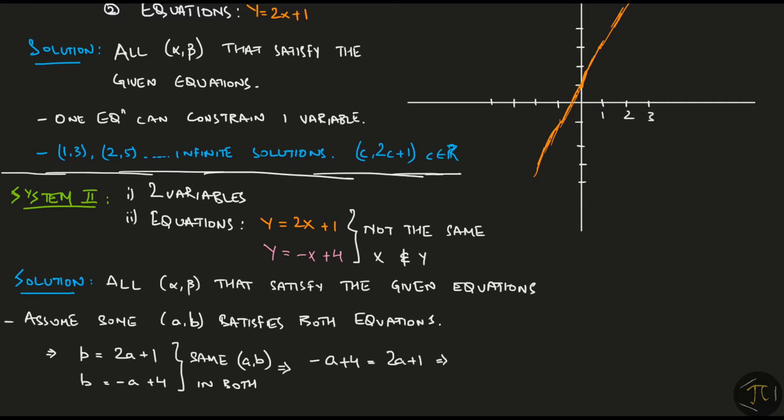we can substitute the B from the first equation into the second equation and then solve the system to obtain A equal to 1 and B equal to 3, which is a unique solution.